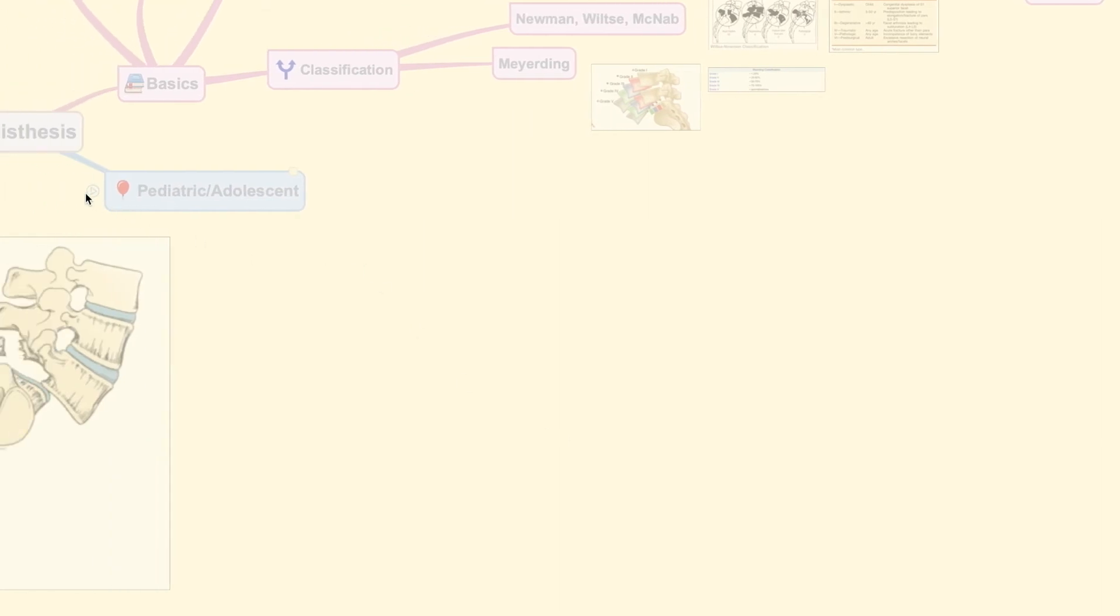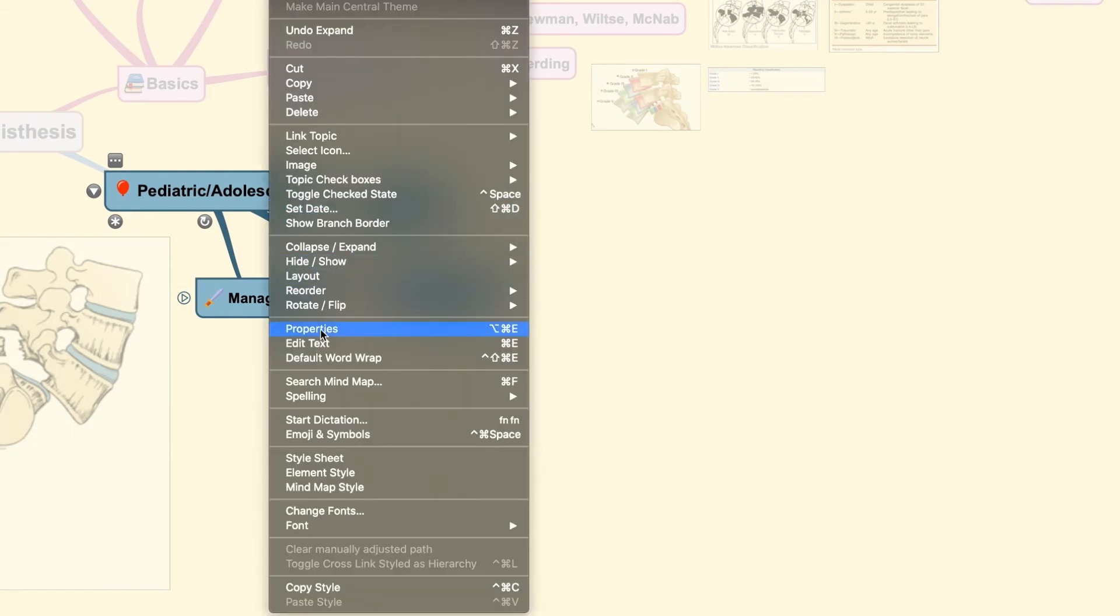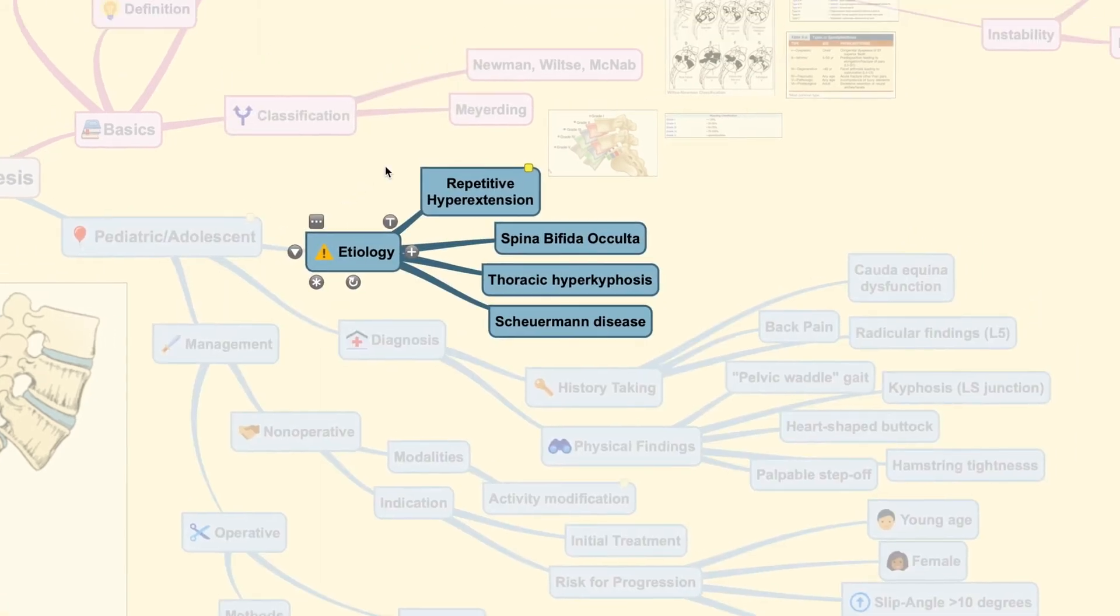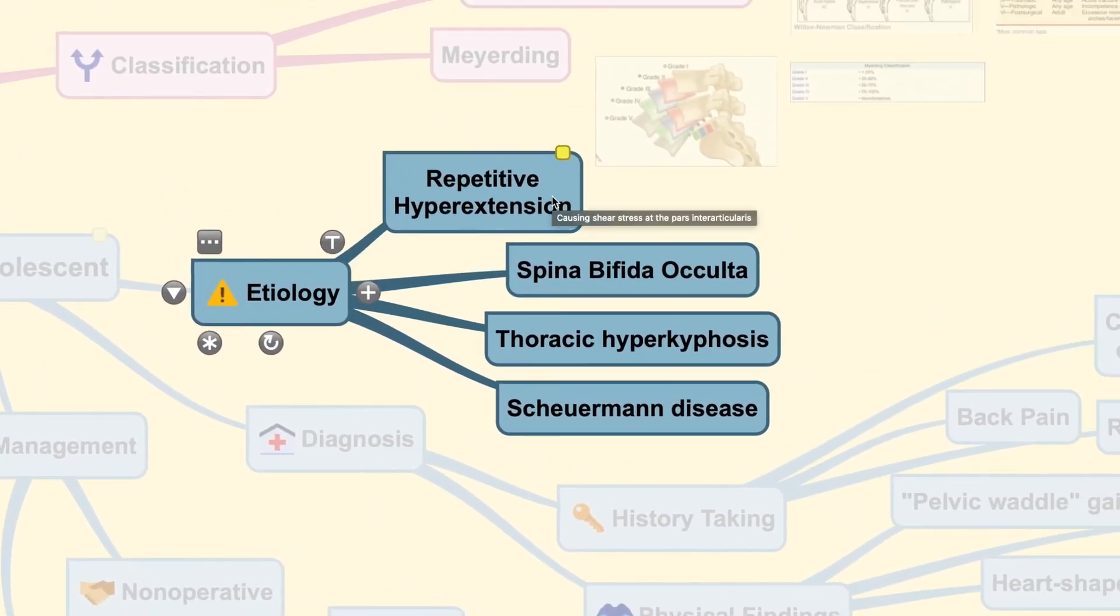Okay, now also in this video, I'm going to cover a little bit regarding the pediatric or adolescent type of spondylolisthesis. As you can see here, etiologically, usually the condition may be caused by repetitive hyperextension of the spine, which causes shear stress over at the pars interarticularis. But some other conditions may also lead to the development of this spondylolisthesis, which is the spina bifida occult type, the thoracic hyperkyphosis or the Scheuermann's disease, which I will cover in other videos sometime in the future.